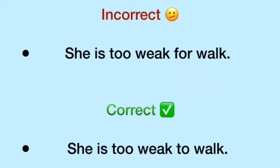Next: 'She is too weak for walk.' Incorrect. The correct sentence is: 'She is too weak to walk.'